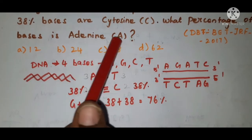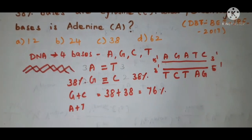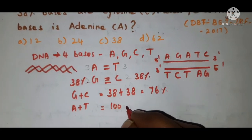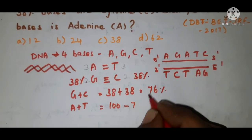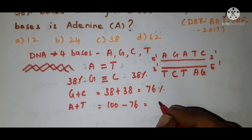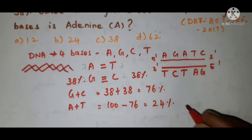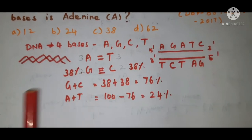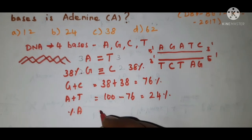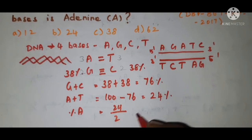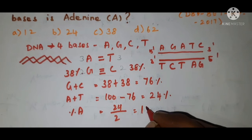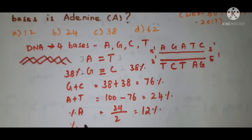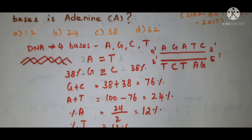Now we want to calculate the percentage of adenine. A plus T is equal to 100 minus 76, which is equal to 24 percent — since all bases together equal 100 percent. This 24 percent is equally shared by adenine and thymine. So to calculate percentage A, you divide 24 by 2, which is equal to 12 percent. So the percentage composition of A is 12 percent, and percentage T is also 12 percent.